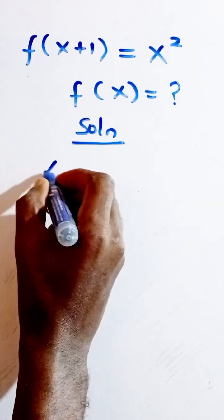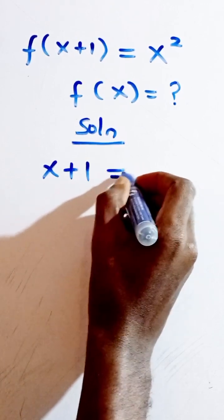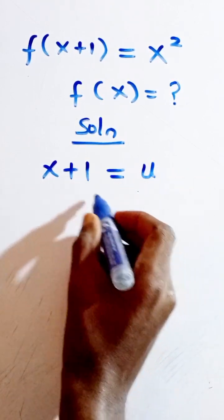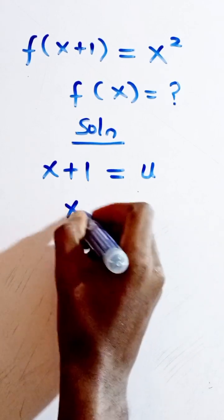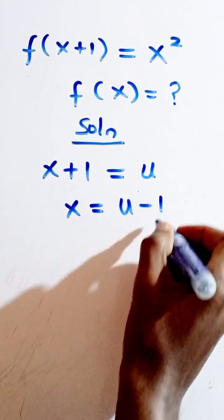So here we are going to let x + 1 = u. Then let's make x the subject of the formula. We have x = u - 1.